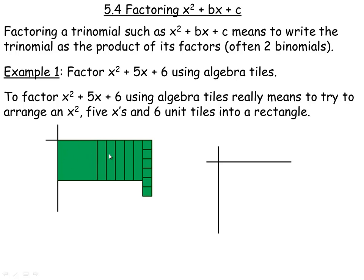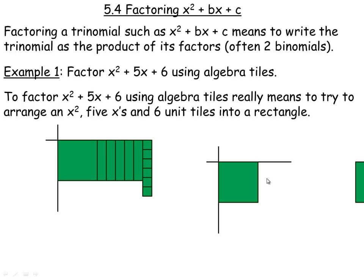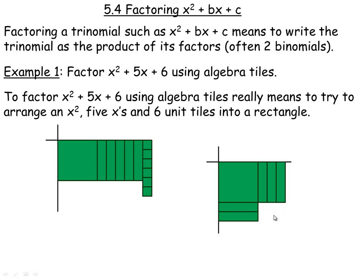So here's an x squared, and then here's five x's, and then that's the 6. Now, the problem with this configuration is it doesn't make a completely filled-in rectangle — we have kind of an empty space here. So that would not help us factor x squared plus 5x plus 6. But if we take an x squared and put it here, and then put three x's on one side and two on the other, then those 6 unit tiles will actually fit right in here.